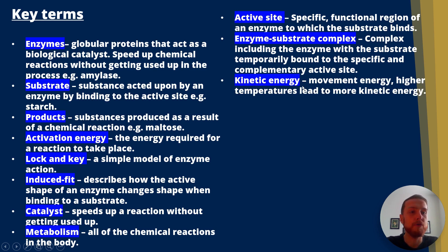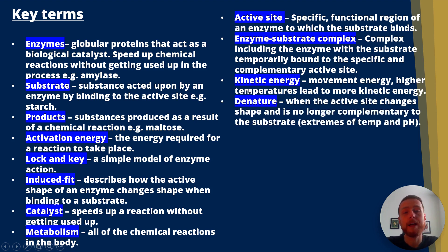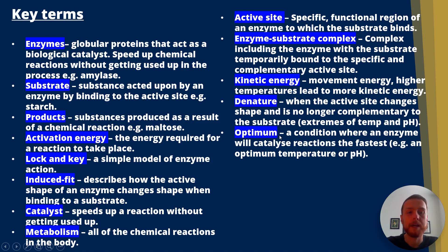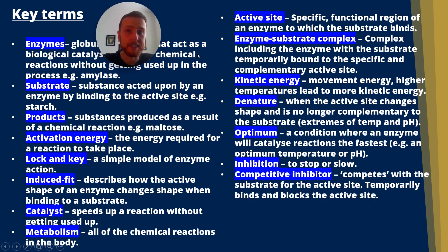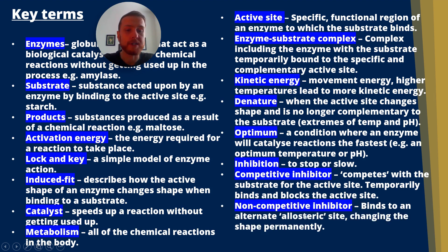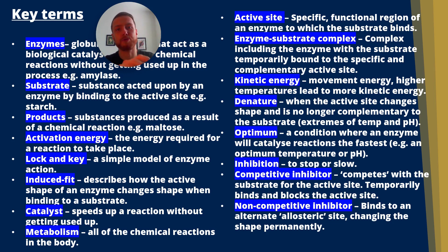Kinetic energy is movement energy; higher temperatures lead to more kinetic energy. Denature is when the active site changes shape and is no longer complementary to the substrate. Optimum is the condition where an enzyme will catalyse the fastest. Inhibition means to stop or slow. A competitive inhibitor competes with the substrate for the active site, temporarily binding and blocking it. A non-competitive inhibitor binds to an alternate allosteric site, which changes the shape of the active site — it does not bind to the active site itself, but to a position on the enzyme called the allosteric site.